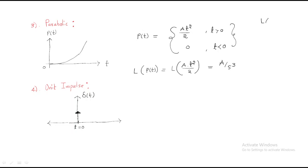To derive this, we use the formula: the Laplace transform of t^n equals n factorial divided by s^(n+1). For at²/2, n equals 2, so we get 2 factorial times a divided by 2, over s^(2+1), which simplifies to a/s³.